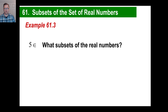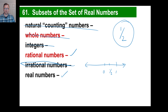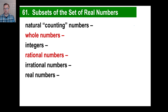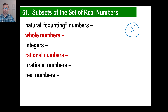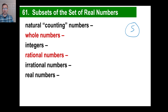Let's go to 5. First off, is 5 part of the counting numbers? Yes — you count: my mother spent 1, 2, 3, 4, 5 hours in Hobby Lobby today. So yes, that's part of the counting numbers. Whole numbers: same thing except for the zero, so yes. Both of those: yes.